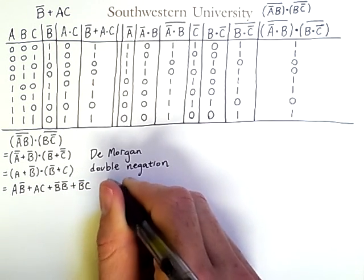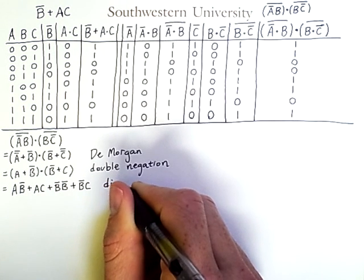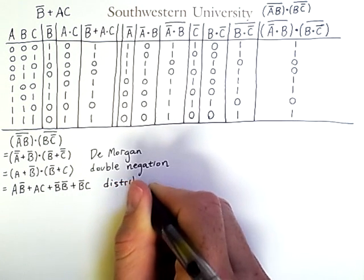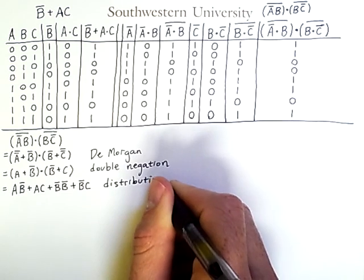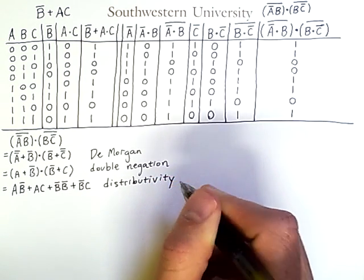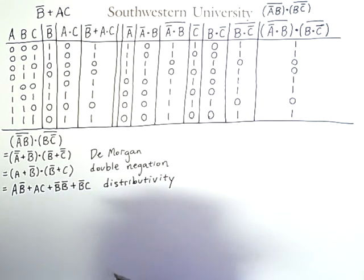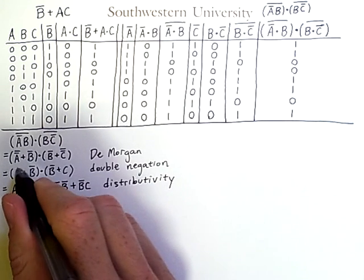This is simply repeated application of the distributive laws, which, once again, is similar to foiling.